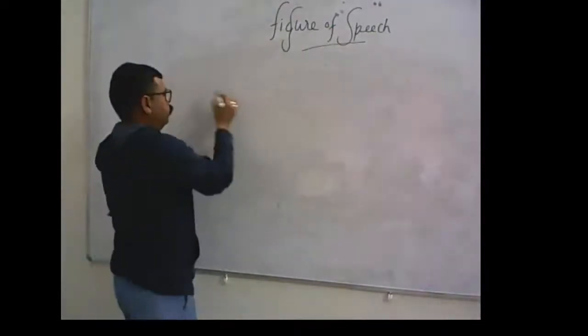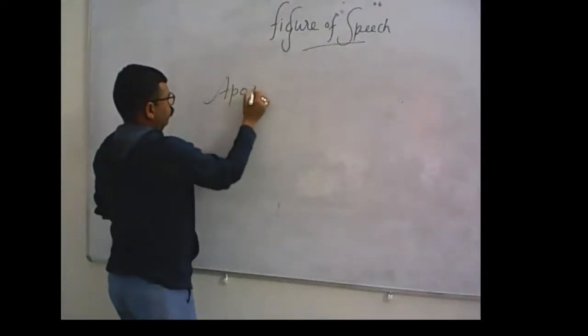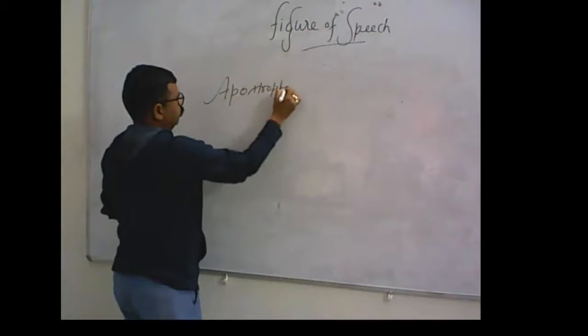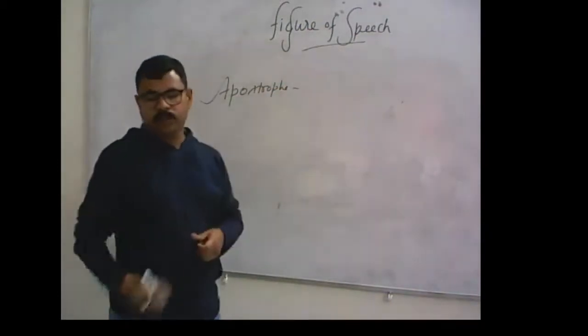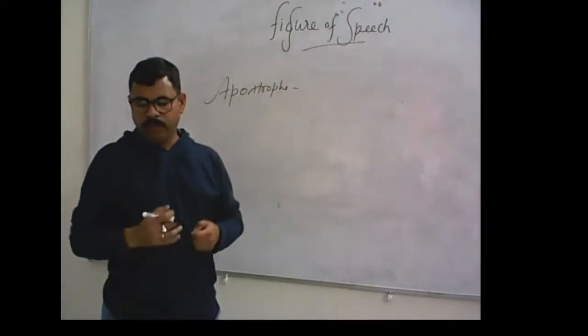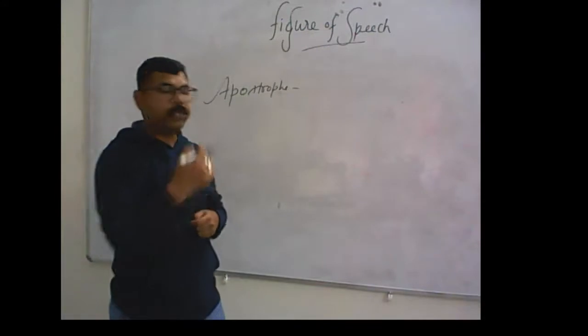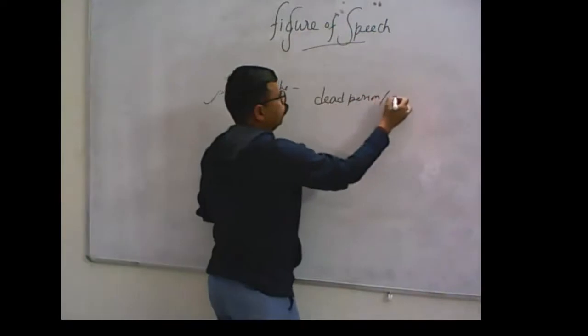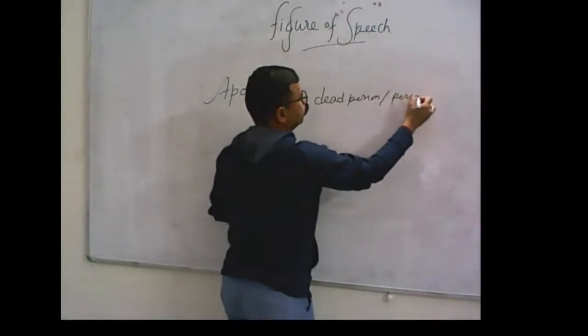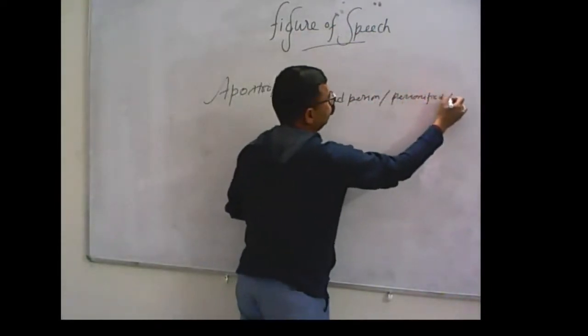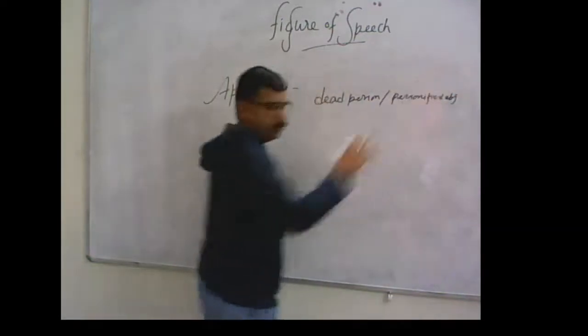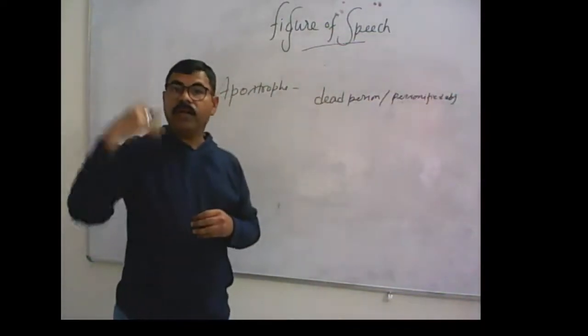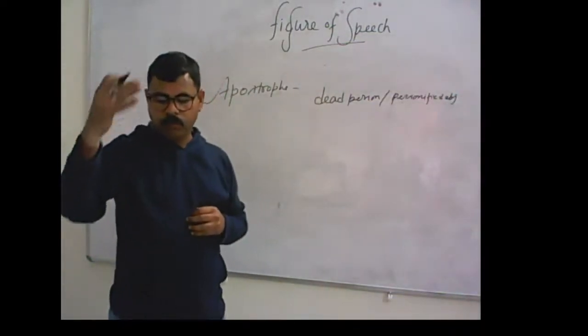Next is apostrophe. Apostrophe means Sambodhan. Here we address a dead person or personified object as if we consider they are living beings.